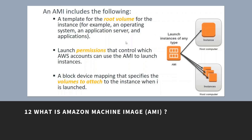What is an Amazon Machine Image, or AMI? It is a template for the root volume for instances — for example, an operating system, an application server, and applications. It also includes launch permissions that control which AWS accounts can use the AMI to launch instances.